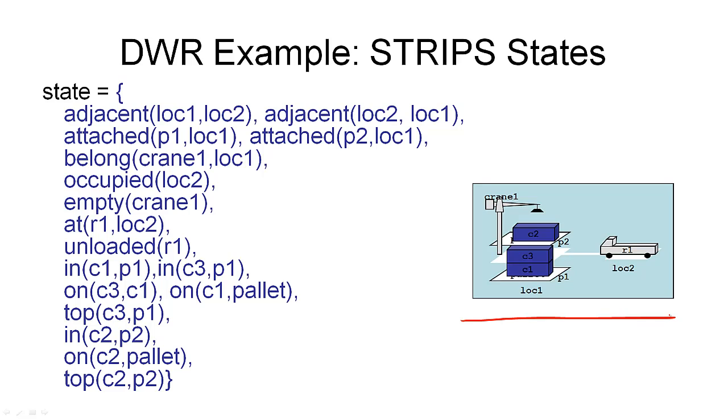The first relation we defined earlier is the adjacent relation. And that tells us which locations are reachable from which other locations. So, we have two locations here, location one and location two. And they are connected by this path. So, what we have is that location one is adjacent to location two and vice versa. And that's what we've got here. We need to actually write down both ways of this relation.